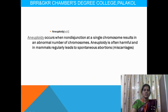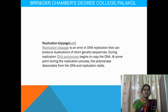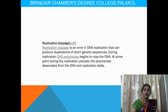Aneuploidy: non-disjunction occurs at a single chromosome. In mammals, aneuploidy regularly causes miscarriage or spontaneous abortions. The next type is replication slippage — an error of DNA replication that produces duplication of short DNA sequences. If a DNA strand has short sequences that are duplicated again and again, that is called replication slippage.